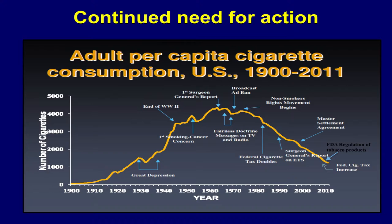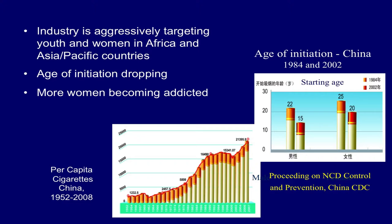This is the U.S. per capita cigarette consumption, which has continued down in most age groups. Although in the last two years, the rate of youth smoking cigarettes has flattened out. Whether that's because of the e-cigarette component is an interesting question. In Asia and Africa, the industry is aggressively targeting young people and women. The age of initiation is dropping in many countries. Per capita consumption in many parts of the world continues to go up.